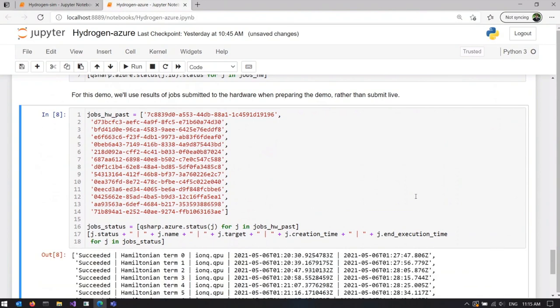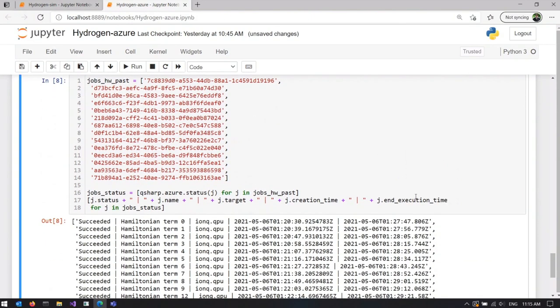Now, you can see that each of these jobs was running on IonQ QPU target, so quantum hardware. And each of them took something like seven minutes between its creation time and its execution time. Most of this time was spent in the queue, waiting for hardware to be available.